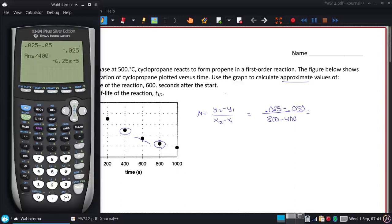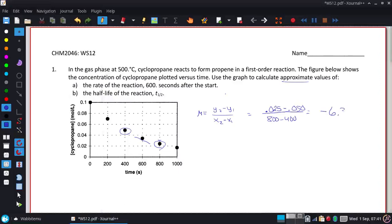And I do get that the rate is dropping by about 6.3 times 10 to the negative fifth moles per liter second. And I'd be happy with that value. It's a good approximation.